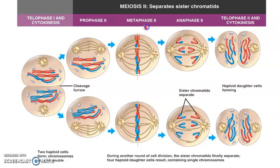In metaphase II, we now have individual sister chromatid pairs, or individual chromosomes, lining up along the middle of the cell. Again, top to bottom, left to right, doesn't matter, however it is in the diagram. But no more tetrads or homologous pairs — they were separated way back in anaphase I. Now we just have the individual chromosomes lining up: three chromosomes in each cell.